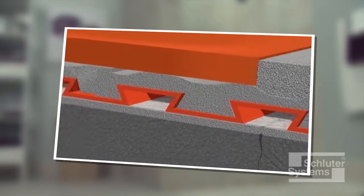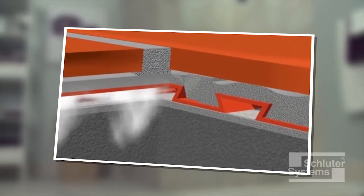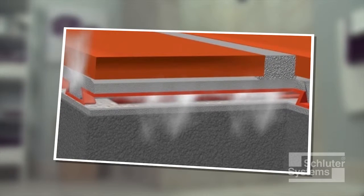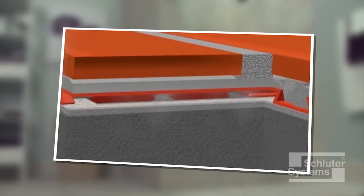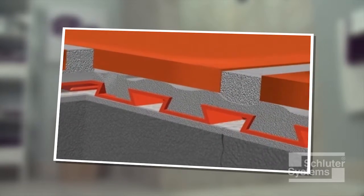DITRA also provides vapor management via the free space created by the open-ribbed structure under the membrane, which allows for tile to be installed over young concrete and concrete subject to moisture migration.